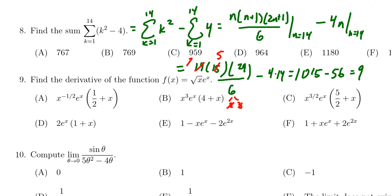And of course if we take 1,015 and subtract 56, we're going to end up with 959, in which case we see the correct answer is C.